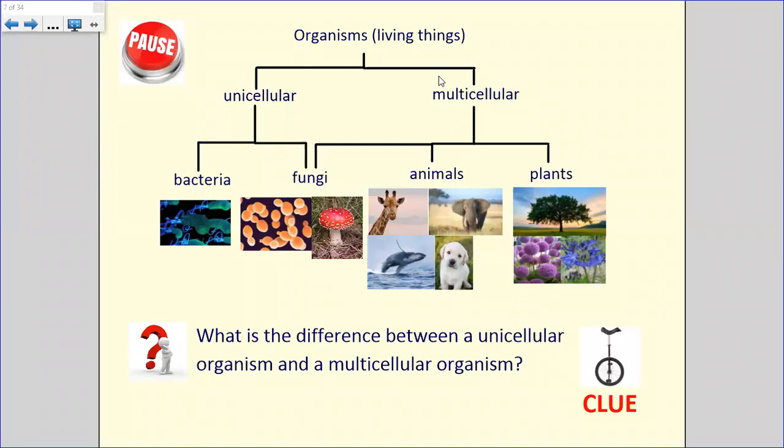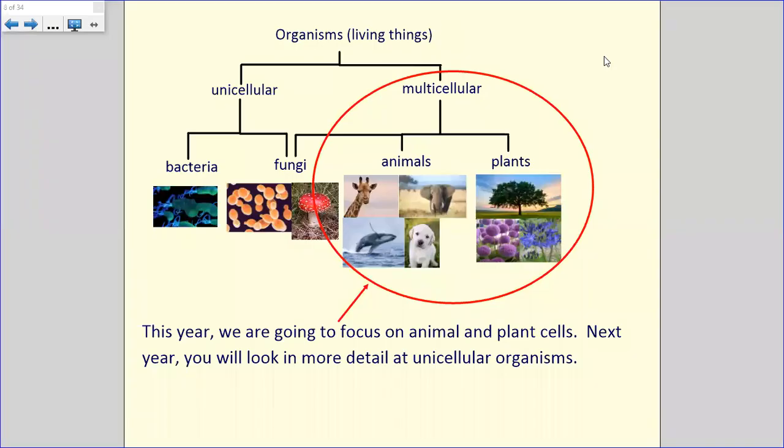So all living things, or all organisms, make sure you say that word correctly when you're in a biology class, you don't want to embarrass yourself. All organisms are made up of cells. But organisms can be split, and you can split them into either unicellular or multicellular organisms. So pause the video, have a look at the diagram, and see if you can tell me what is the difference between a unicellular organism and a multicellular organism. So yeah, unicellular organisms are living things that are made up of one cell only, whereas multicellular organisms are living things that have more than one cell. And that's what we're going to look at this year. We're just going to focus in third year, we're going to look at multicellular organisms. We're going to look at animals, and we're going to look at plant cells.